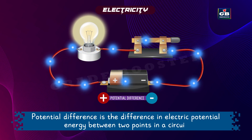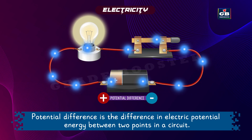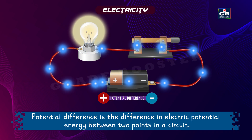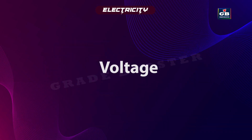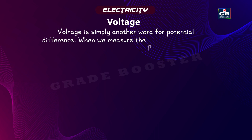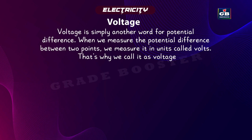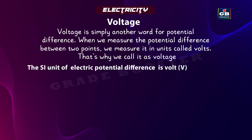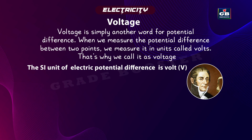Potential difference is the difference in the electric potential energy between two points in a circuit. Voltage is simply another word for potential difference. When we measure the potential difference between two points, we measure it in units called volts. That is why we call it voltage. The SI unit of electric potential difference is volt (V), named after Italian physicist Alessandro Volta.